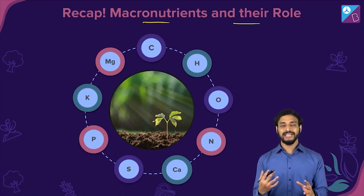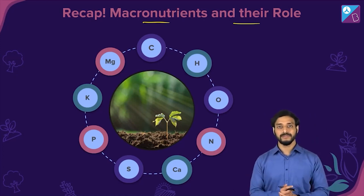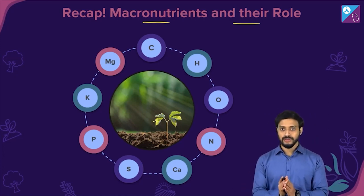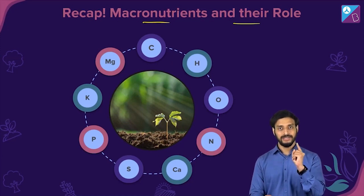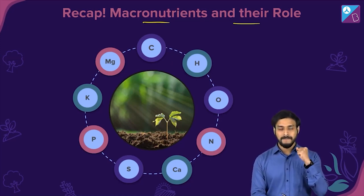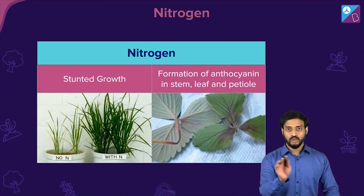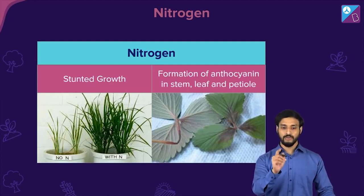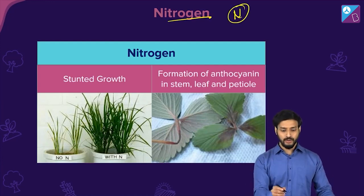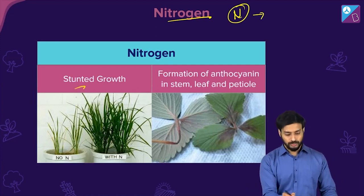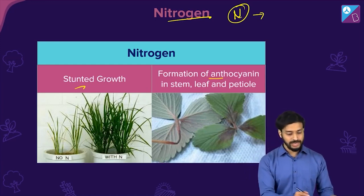Now let's quickly talk about deficiency symptoms — what happens when these elements are not present in sufficient amounts. Take short notes: for nitrogen, write 'N' with an arrow, then write 'stunted growth' and 'formation of anthocyanin.'